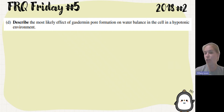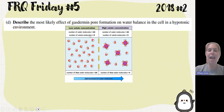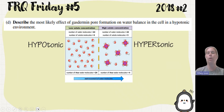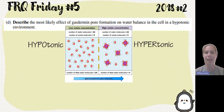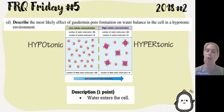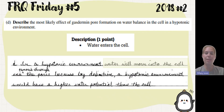Part D asks you to describe the most likely effect of gasdermin pore formation on water balance in a hypotonic environment. Hypotonic means high free water and low solute outside the cell. Water always moves from high to low concentration, so it moves from hypotonic to hypertonic — meaning water will rush into the cell. In a hypotonic environment with gasdermin pores allowing nonspecific entry, water enters the cell. The student correctly stated water moves into the cell.